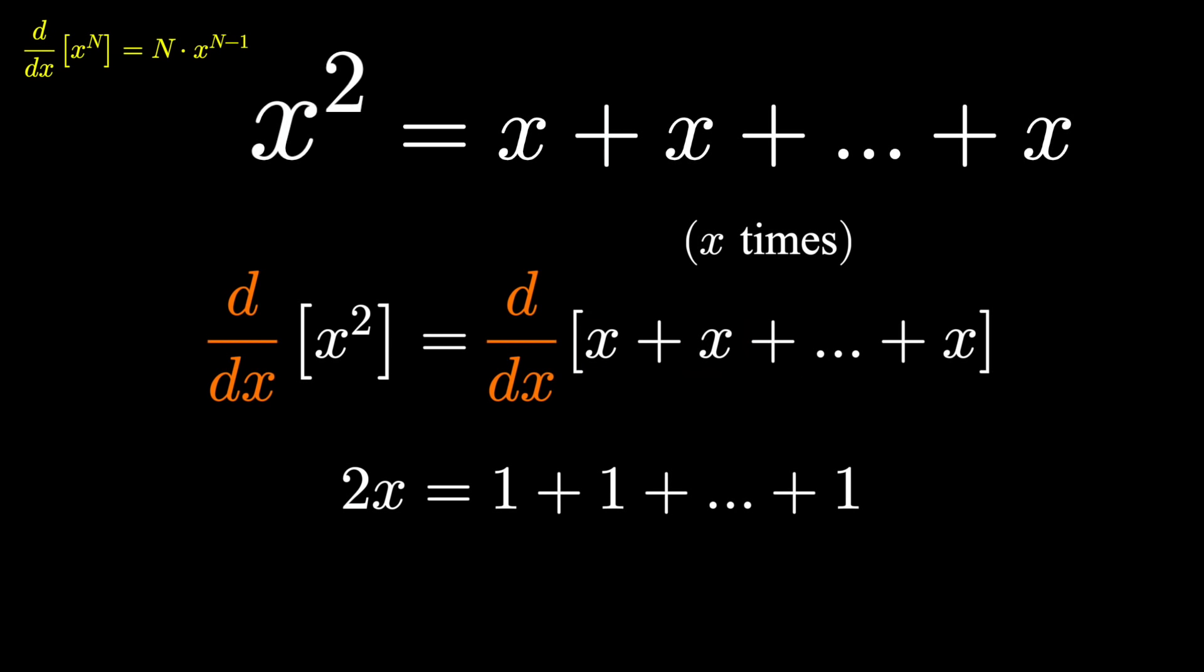Again, by the power rule, the derivative of x is 1, 1 times x to the 0 power. And there were x of these terms on the right-hand side. So 1 plus 1 plus 1, x times, is x.